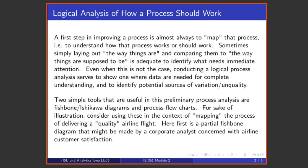These two tools that we're going to speak about here can help to show where data are needed and they can help to identify potential sources of variation, that is sources of lack of quality. We're going to speak here about something called a fishbone or Ishikawa diagram and then we're going to talk about the use of a flowchart.